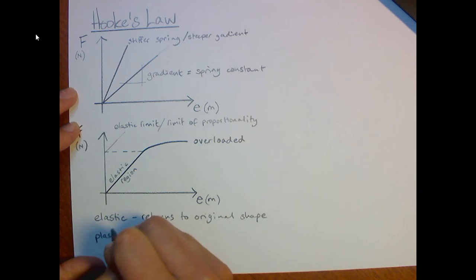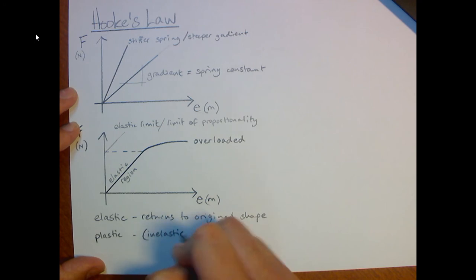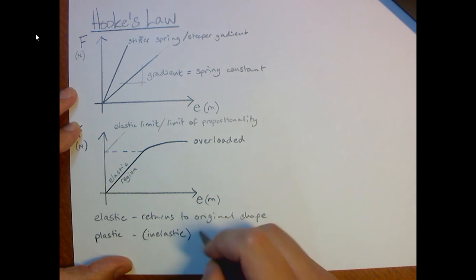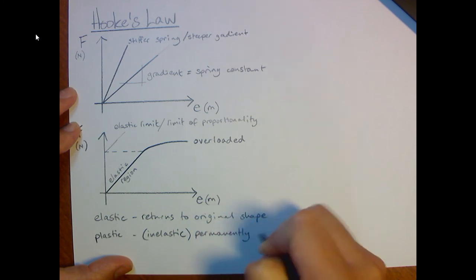Plastic, also known as inelastic. Plastic, unfortunately, we do have some terms which are the same. Plastic is also known as inelastic, which means that it doesn't return to its original shape or that it is permanently deformed.